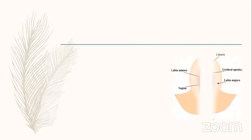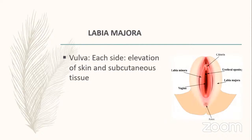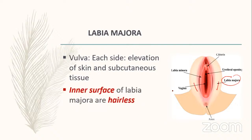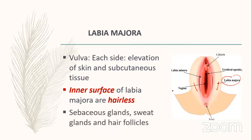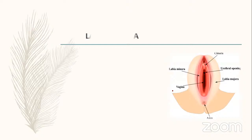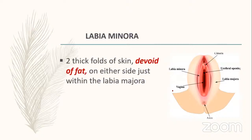Labia majora is present on each side of the vulva. The outer surface has hair follicles and glands, but the inner surface of labia majora is hairless. Labia majora contains sebaceous glands, red glands, and hair follicles on its outer surface.